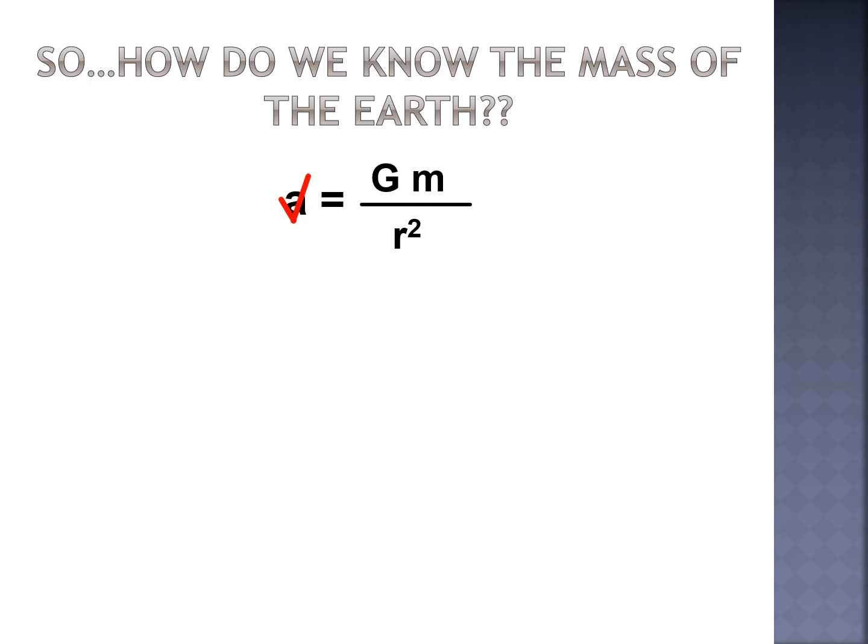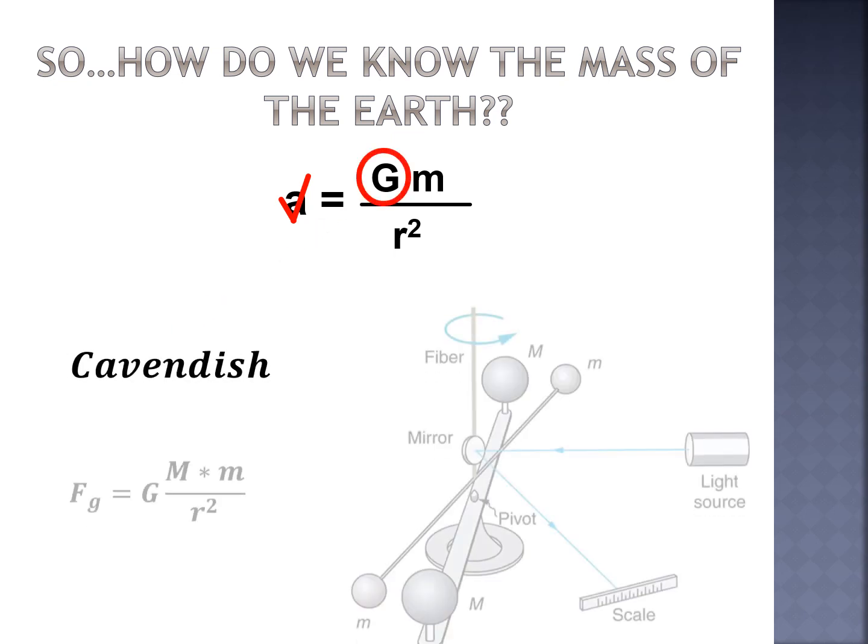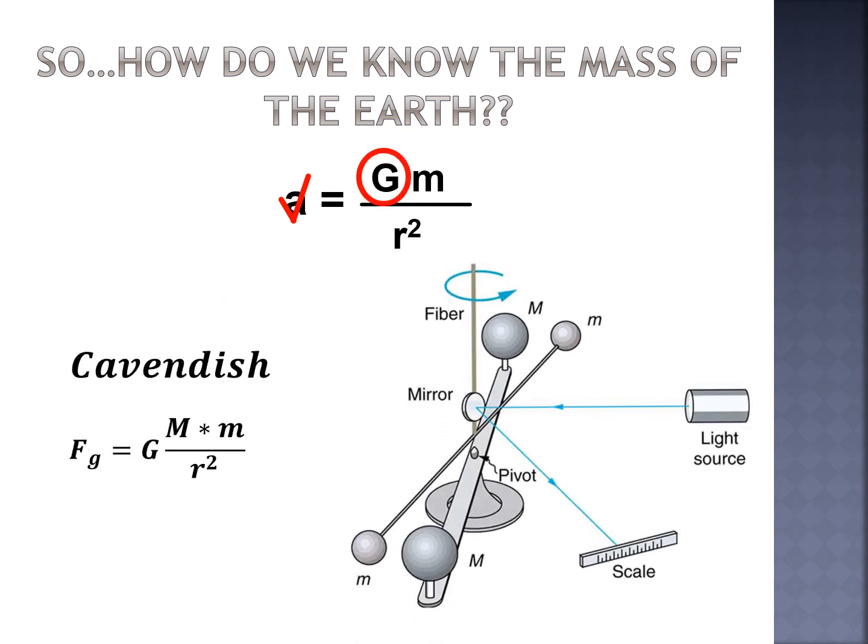Next we need to figure out the gravitational constant. Cavendish was the first person to really accurately measure it. Newton and Kepler had worked together — Kepler had the data, Newton used it in his equation, and he got pretty close, but it wasn't too precise considering they were looking at astronomical objects like comets, asteroids, and moons.